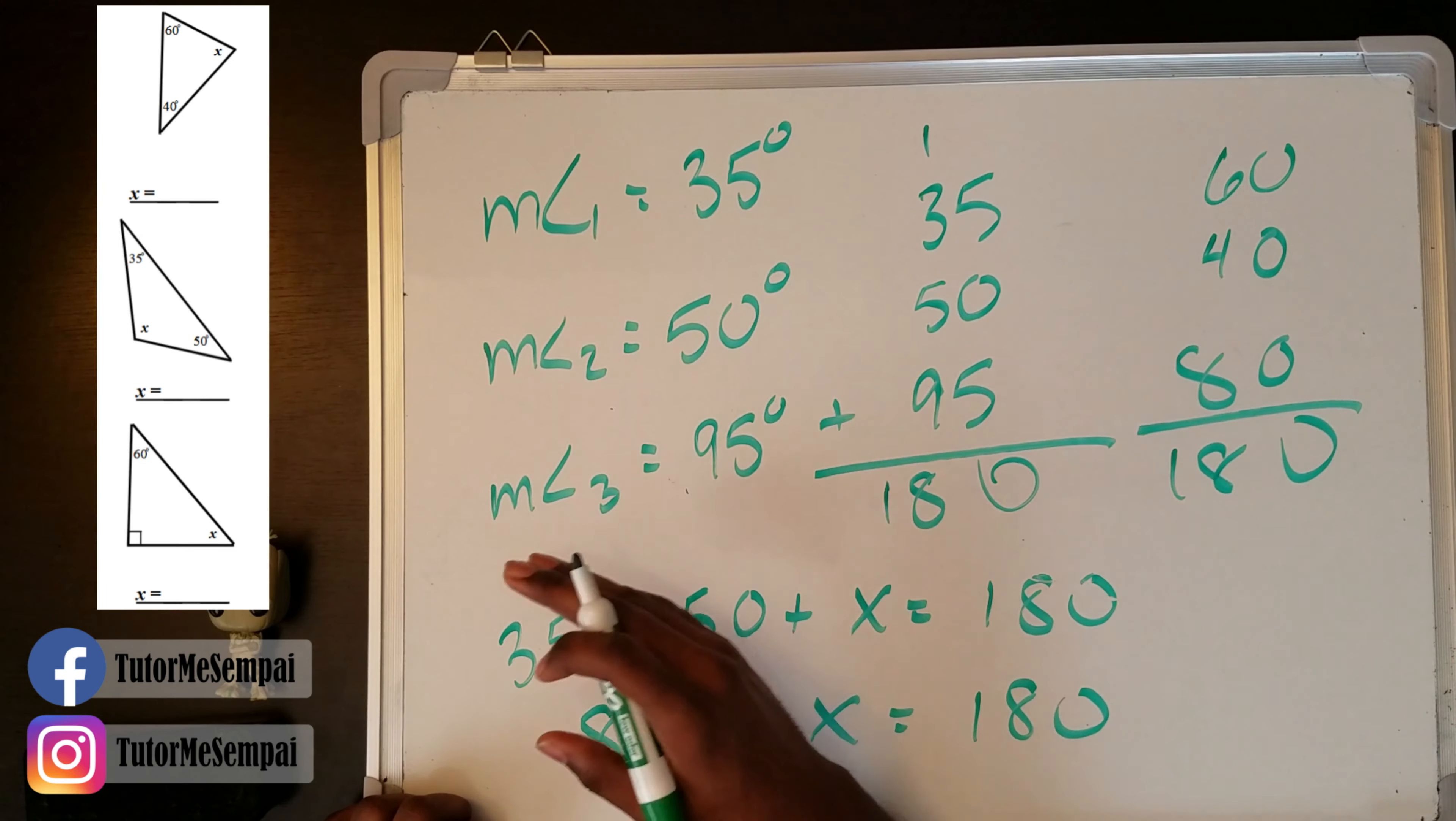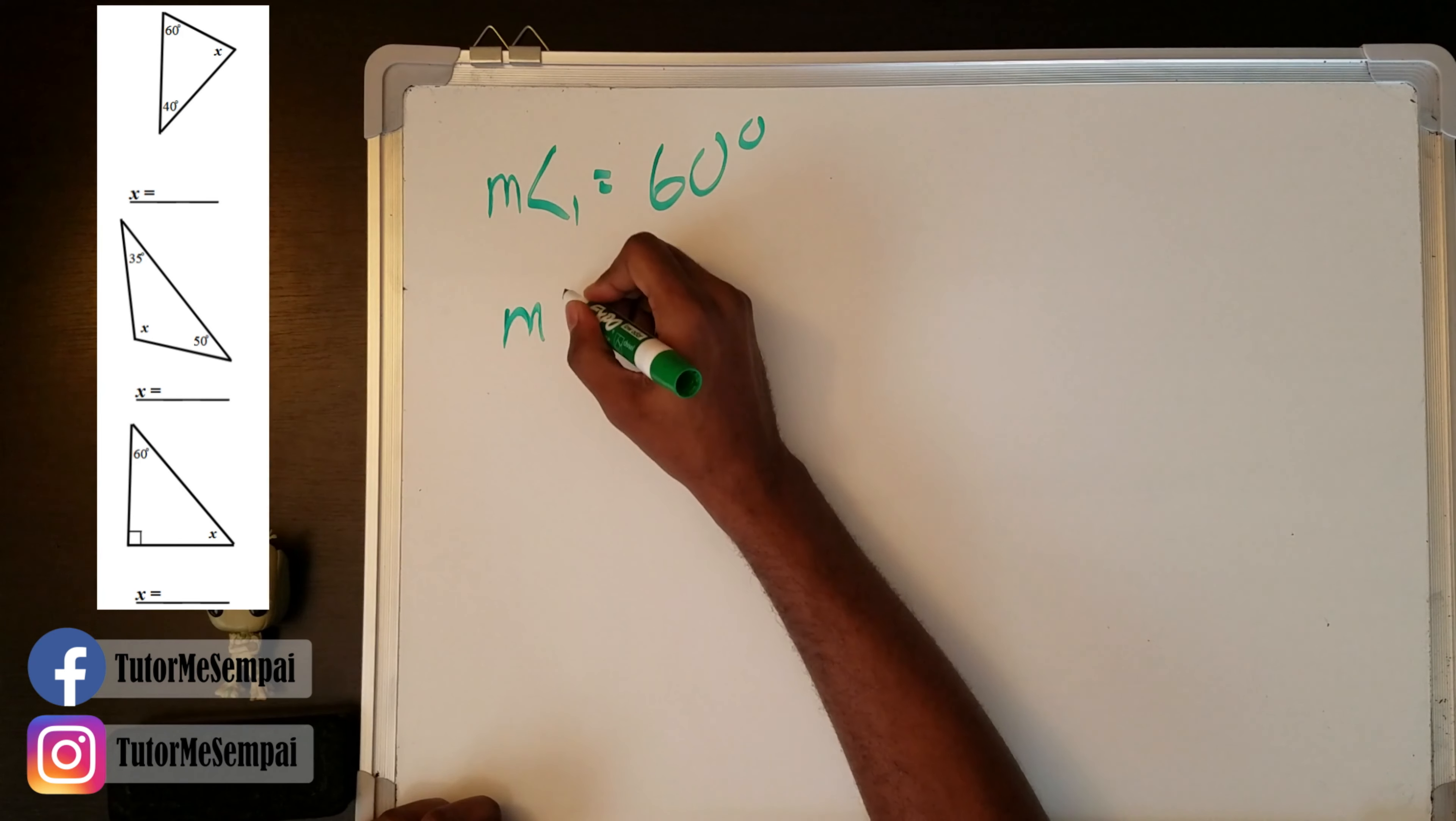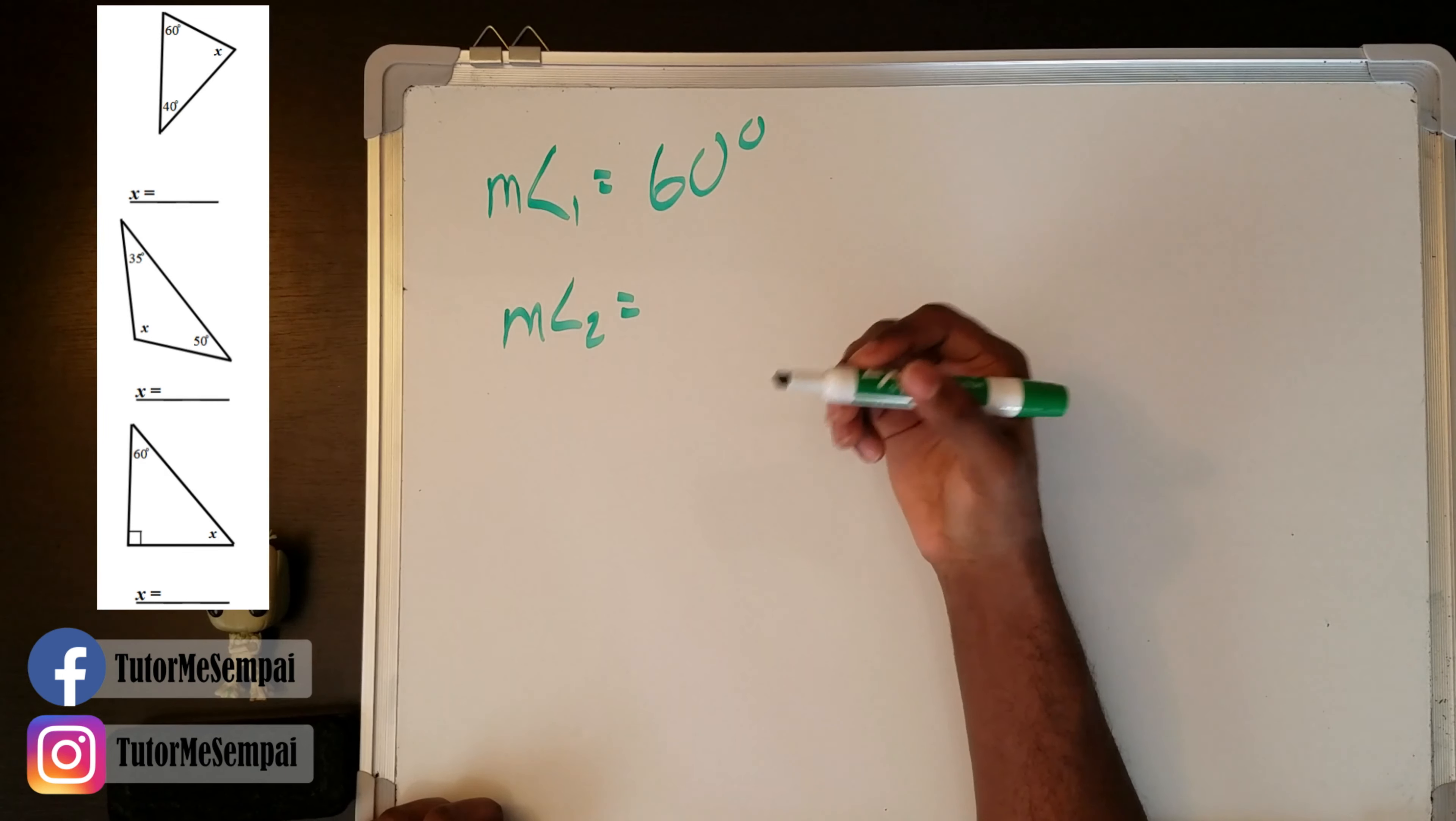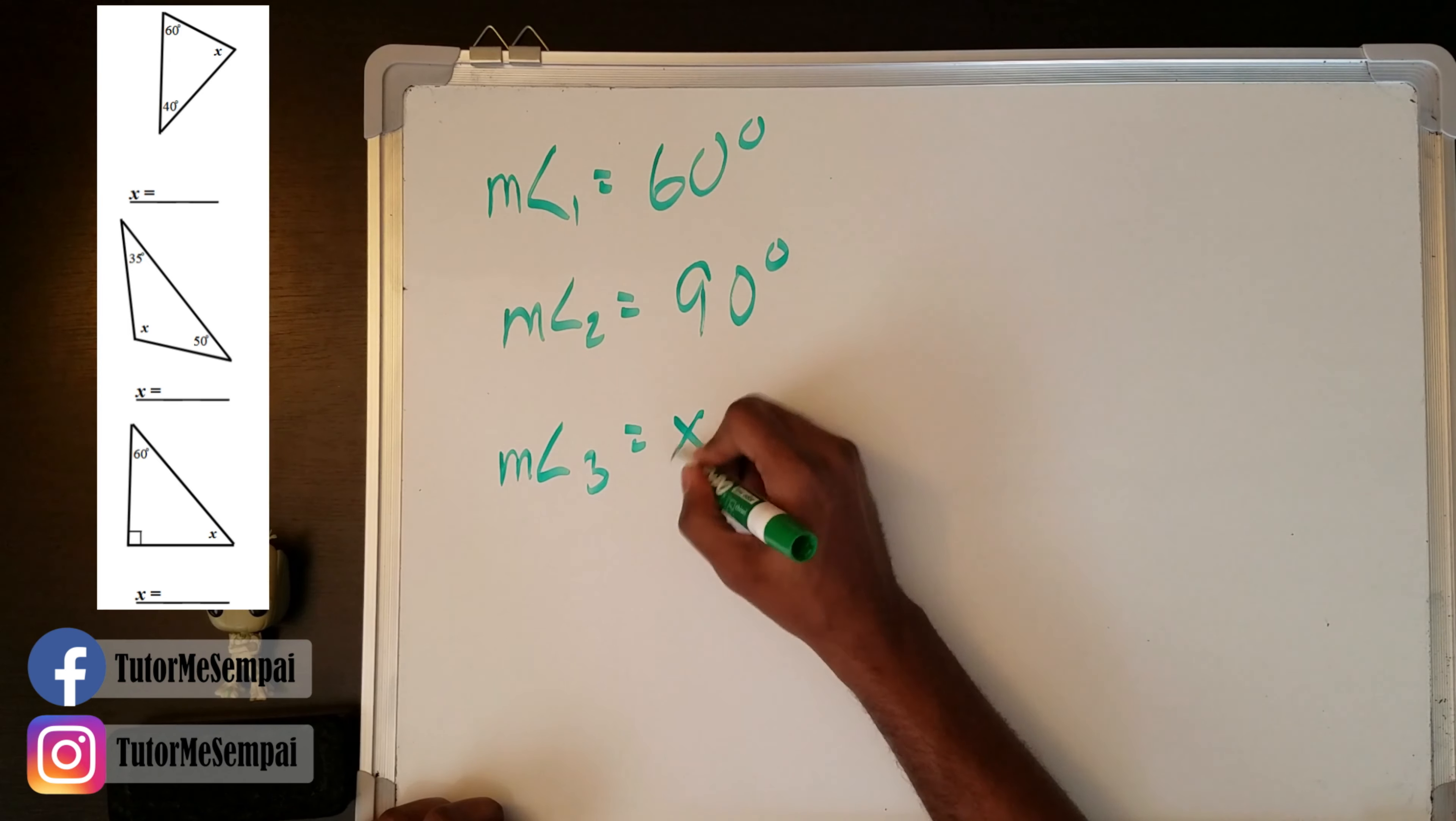So let's look at this third one, our final triangle for today. Our first measure that we see here, measure of angle one, is 60 degrees. Now we have this other angle that we know it's a right angle. We have that box, which lets us know it's going to be a right angle. What is the measure of a right angle? So they don't write it here, but we know that the measure of a right angle has to be 90 degrees. Has to. So if you see that box, they don't actually give you a number. That's an understood 90 degrees. And then the measure of our third angle, we don't know what that is. So we're going to give it an X.